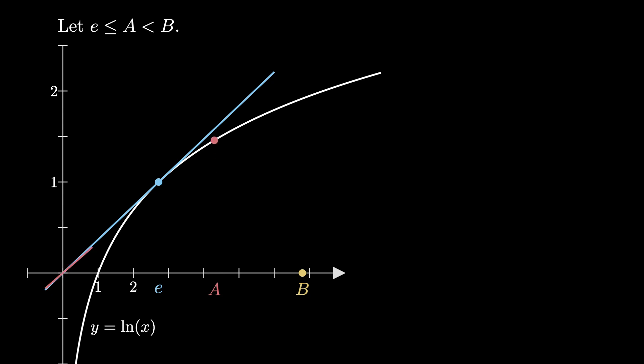we know that the secant line connecting the origin to the point a natural log of a has a larger slope than the secant line connecting the origin to the point b natural log of b. So in this picture, this means that the secant line in red with slope ma has a larger slope than the secant line pictured in yellow with the slope mb, so ma is greater than mb.